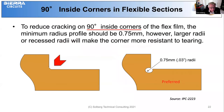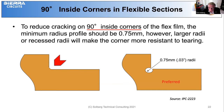When dealing with corners, we want to avoid sharp 90-degree inside corners because that's another area where tears could begin. To reduce cracking on 90-degree inside corners, a minimum radius profile should be in the range of 0.75 mm; however, a larger or recessed radius would be preferred. When it's necessary for the flex circuit to conform to a sharp corner, the recessed detail is probably preferred — that way there's no stress on the flex.